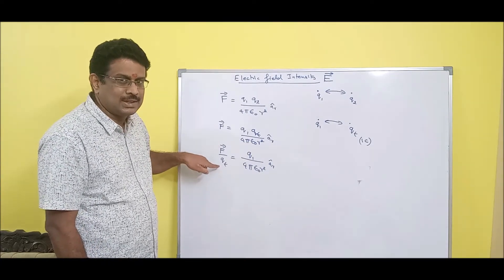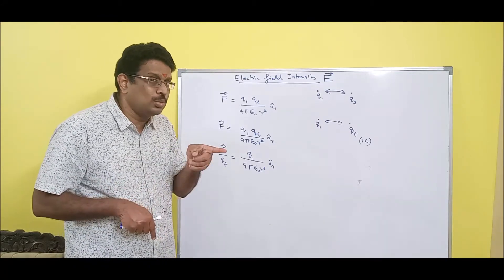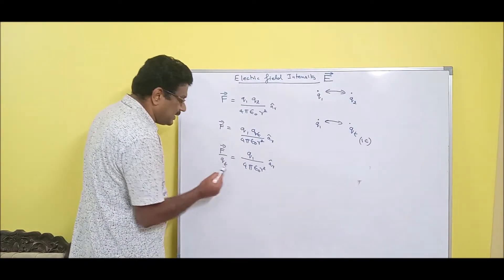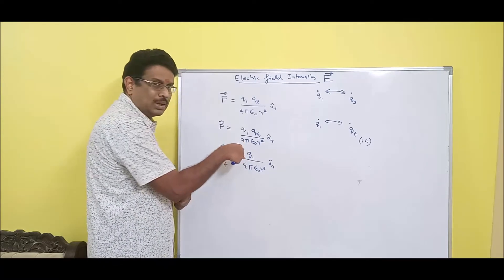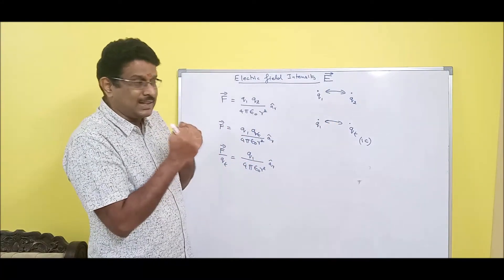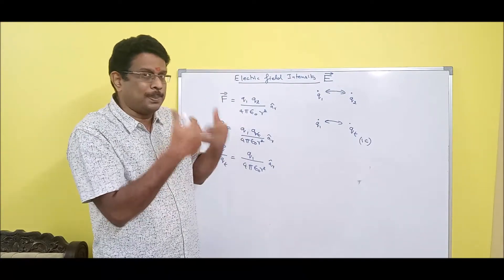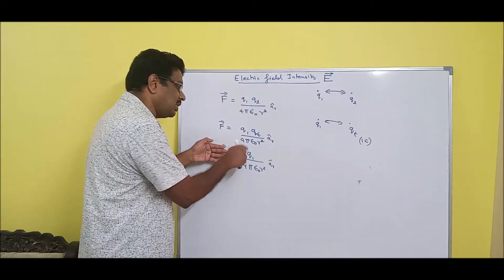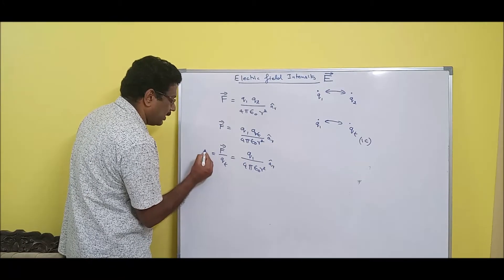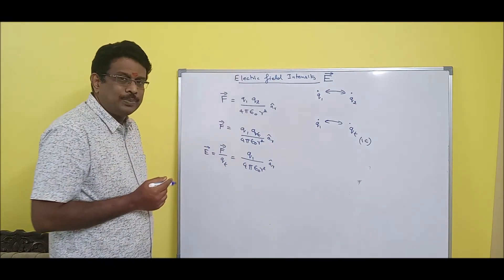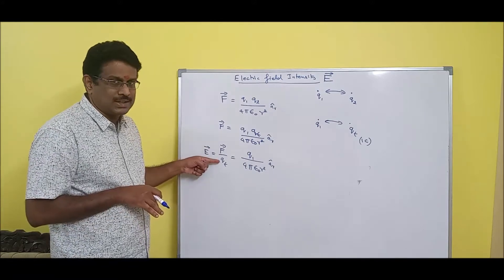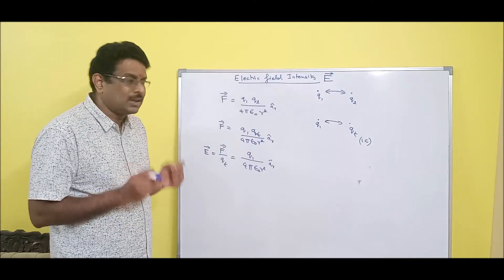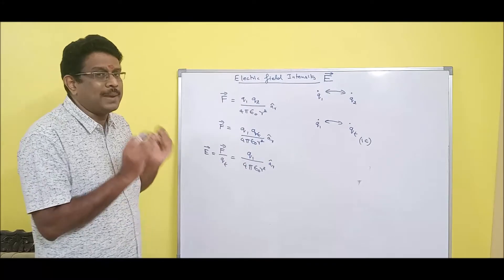This is the force on the test charge due to the source charge Q1. This gives you the strength of Q1's field — just as the coach assesses the boxer's strength. We call this E. E is the force on the test charge, which represents the strength of the electric field created by Q1. It is called electric field intensity.